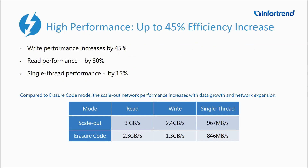Distributed Mode also shows outstanding performance numbers in performance testing. In write performance, Distributed Mode will increase by 45% over Erasure Code mode. Read performance will increase by 30%, and single-thread performance will increase by 15%. As the amount of data grows and the network expands, the scale-out network performance also increases.